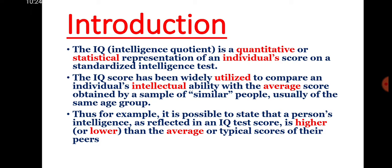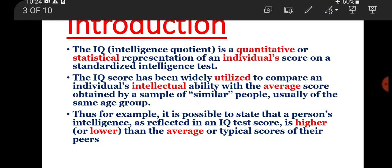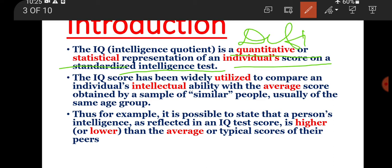In terms of psychology, IQ is basically a quantitative and statistical representation which we can express in numbers and statistics. What we represent is the individual scores on a standardized intelligence test. IQ can be defined as a quantitative and statistical representation of an individual's score on a standardized intelligence test, and it is widely used to compare intellectual ability with the average score.